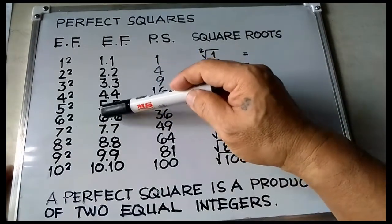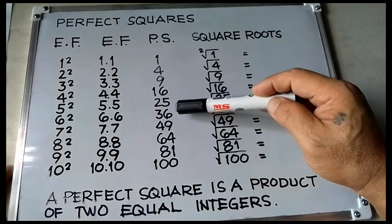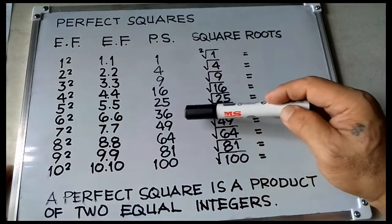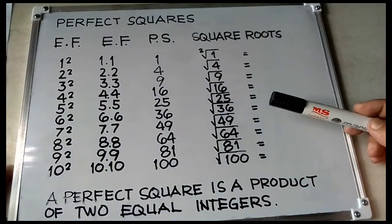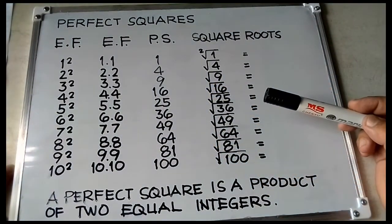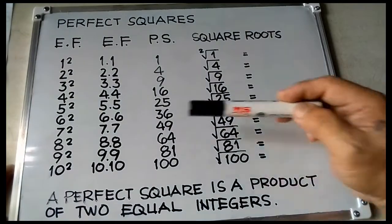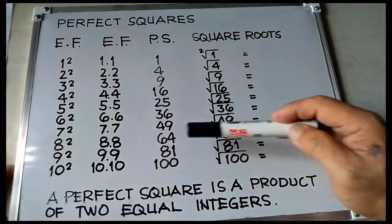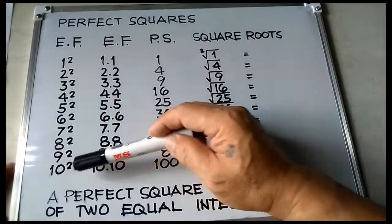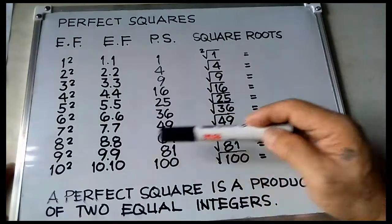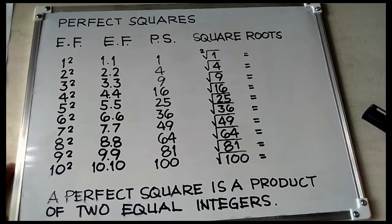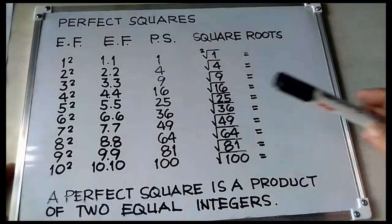5 squared is equal to 5 times 5, is equal to 25. 6 squared is equal to 6 times 6, is equal to 36. 7 squared is equal to 7 times 7, is equal to 49. 8 squared is equal to 8 times 8, is equal to 64. 9 squared is equal to 9 times 9, is equal to 81. 10 squared is equal to 10 times 10, is equal to 100.